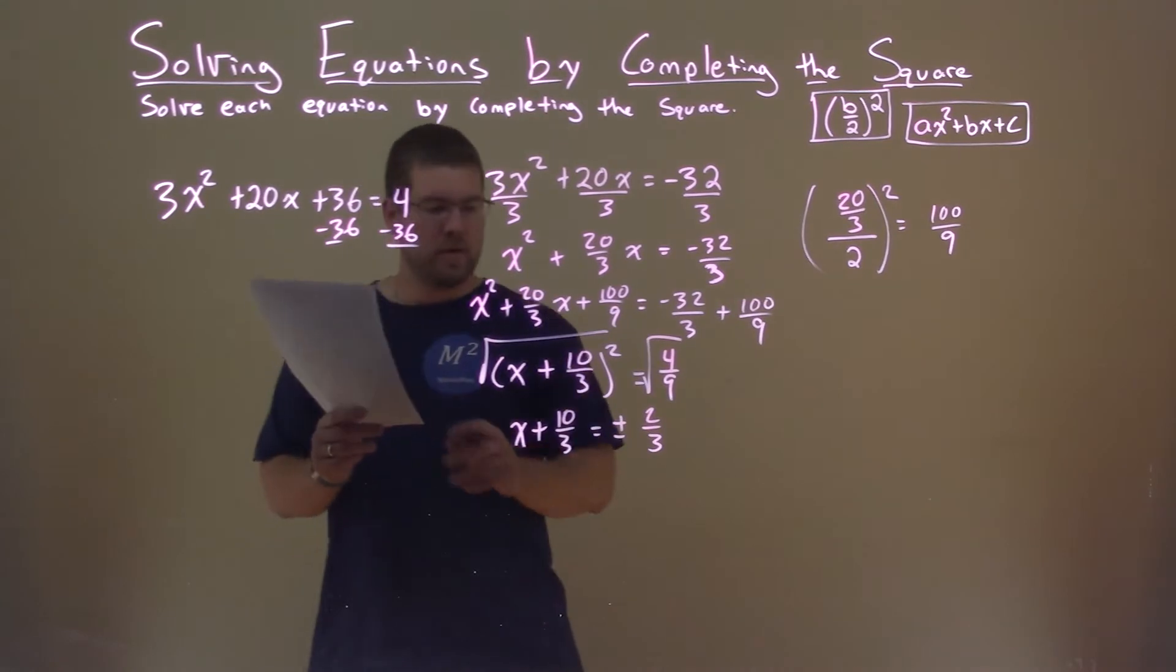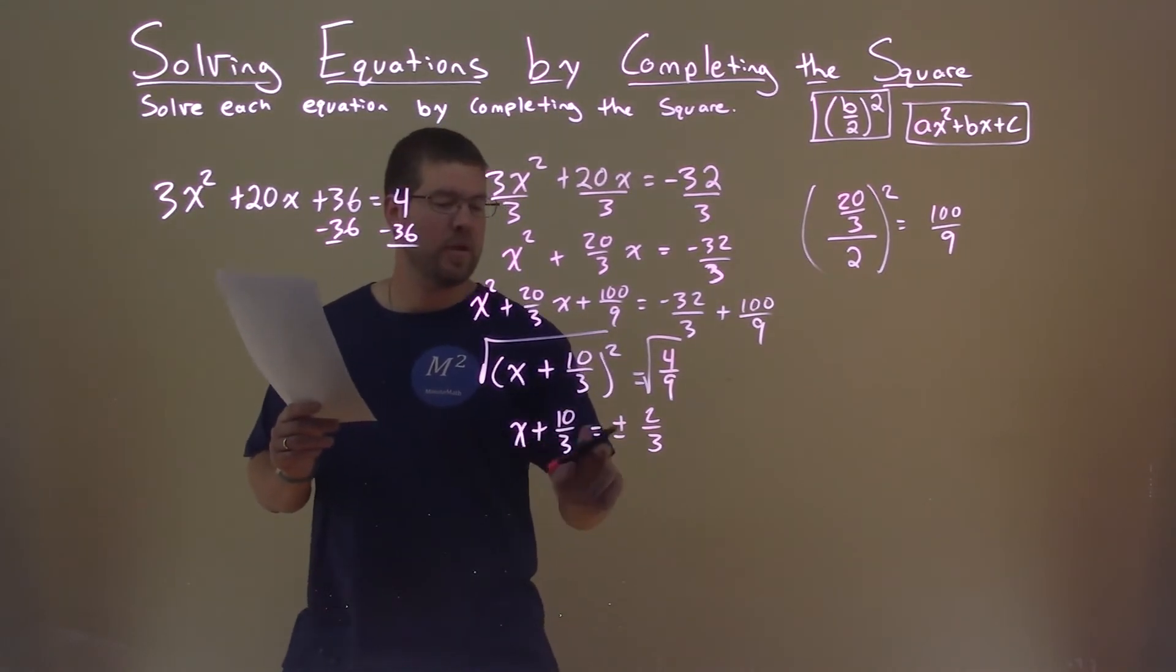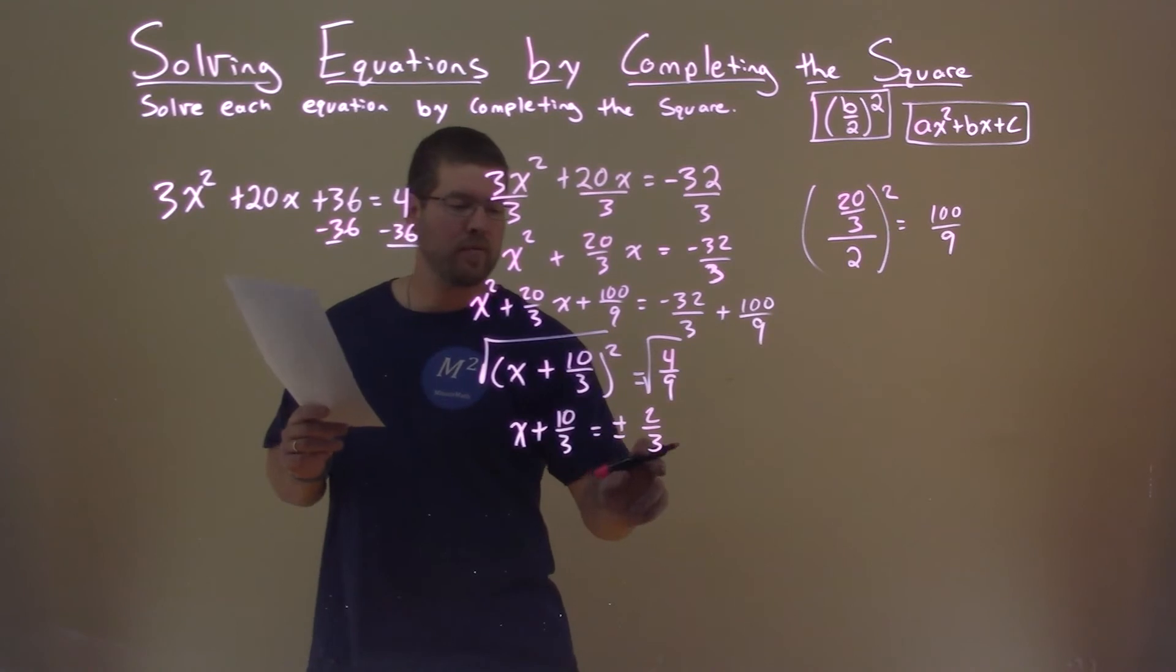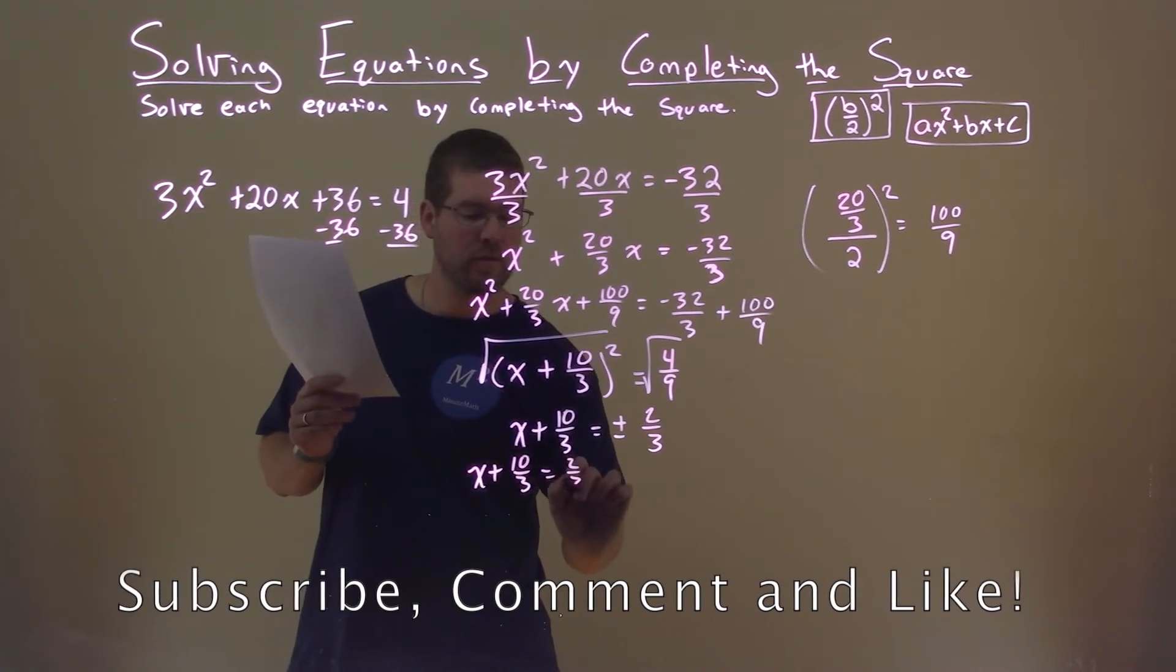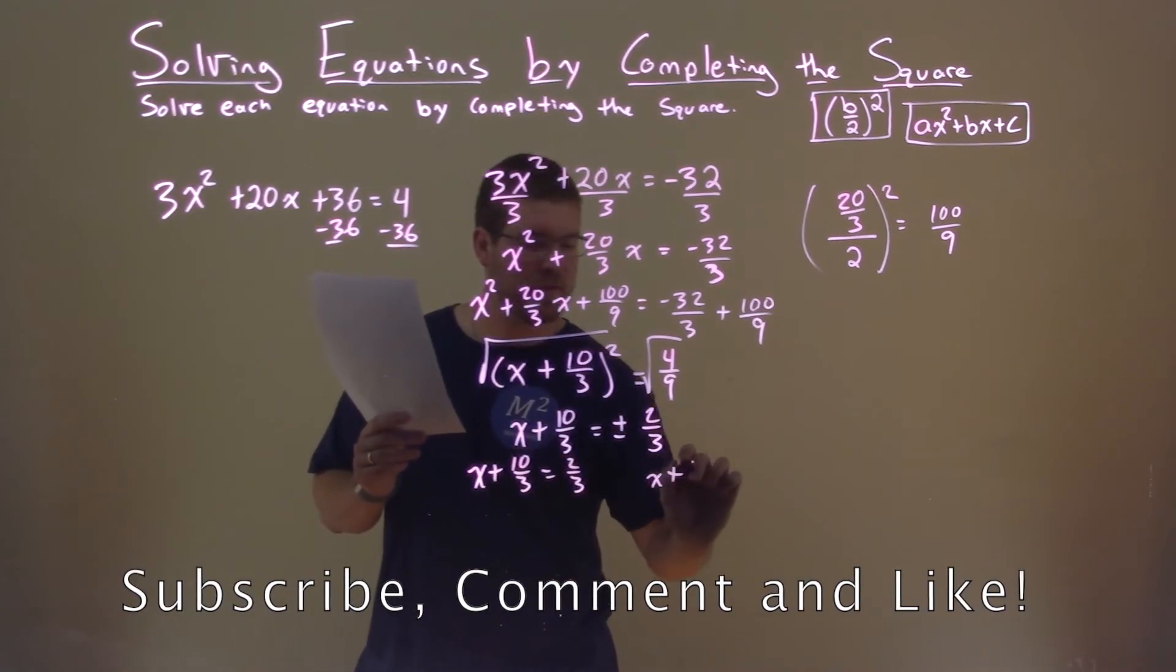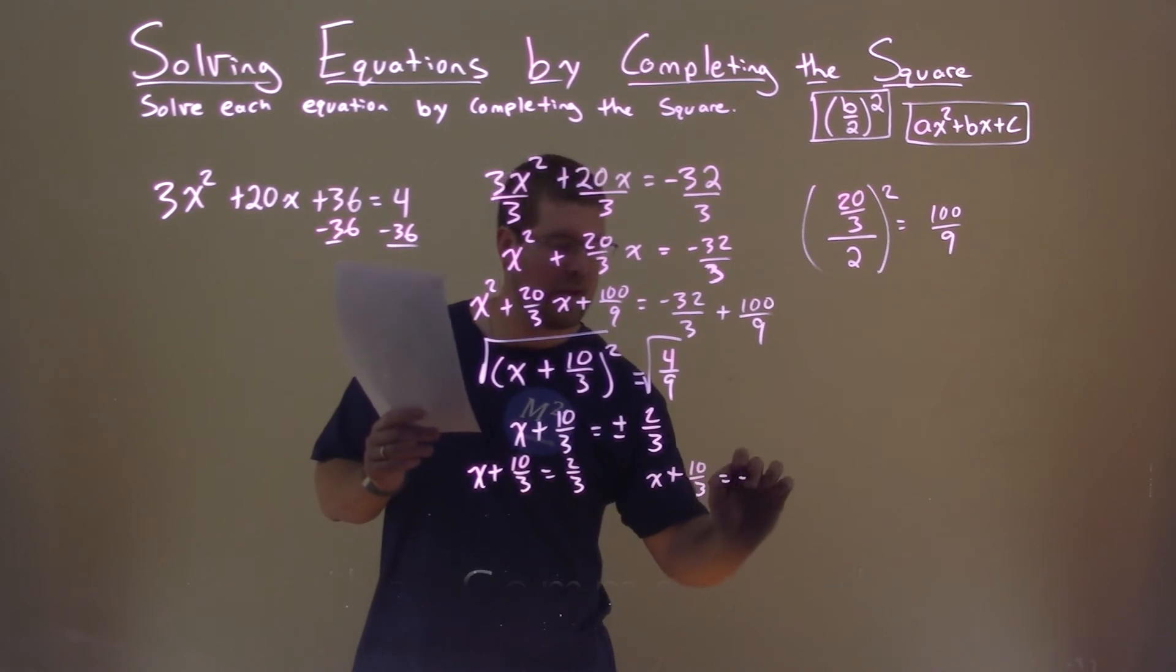So we have x plus 10 over 3 equals plus or minus 2 thirds. That plus or minus, we can break down into two equations. We have x plus 10 thirds equals a positive 2 thirds, and x plus 10 thirds equals a negative 2 thirds.